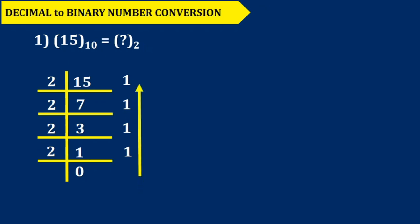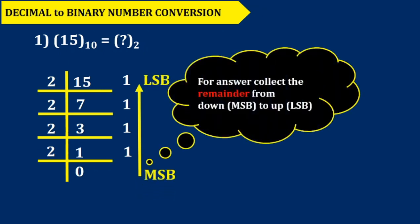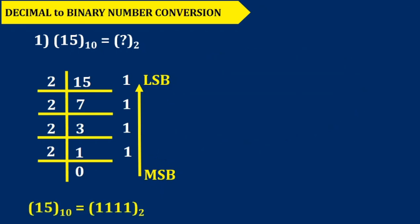Now we have to collect the remainders such that they represent the corresponding binary number of decimal number 15. They should be collected from downward to upward, where the downward number indicates the most significant bit and the upper number indicates the least significant bit. The binary corresponding number of decimal number 15 is 1111.